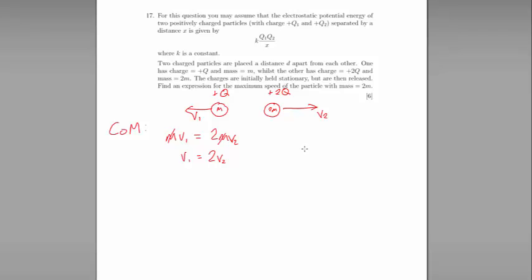These particles are moving apart because they have electrostatic potential energy as given to us in the equation above. All of that electrostatic potential energy is being converted into kinetic energy which is why these particles are moving.